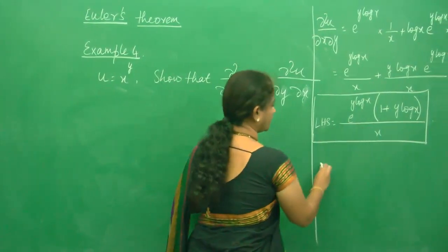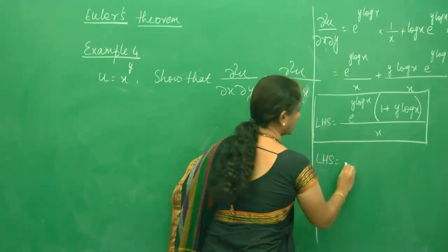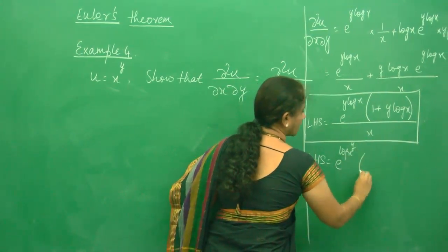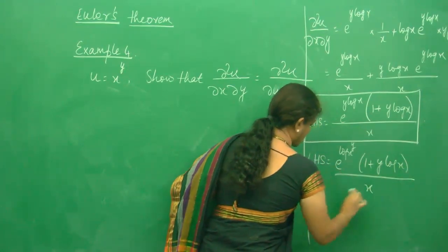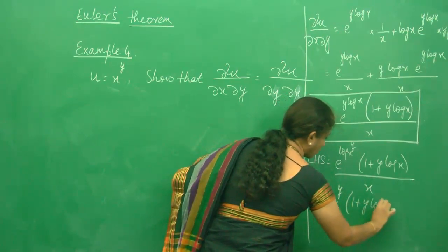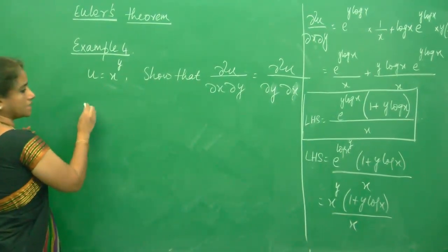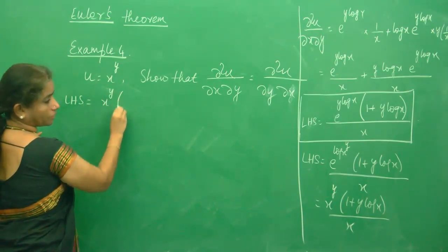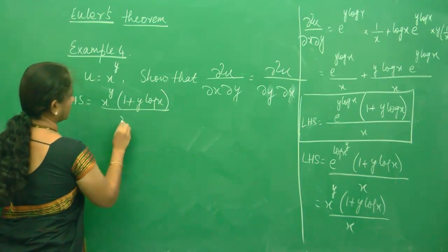We can simplify further: e^(y log x) = e^(log x^y) = x^y. So the left hand side becomes x^y · (1 + y log x) / x.